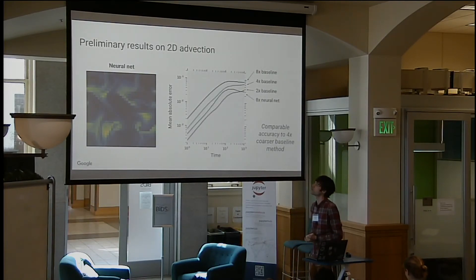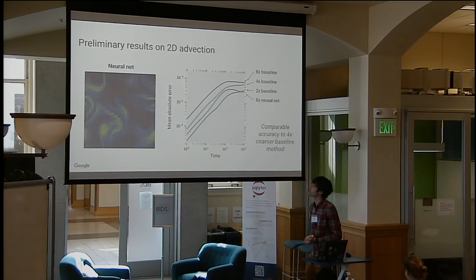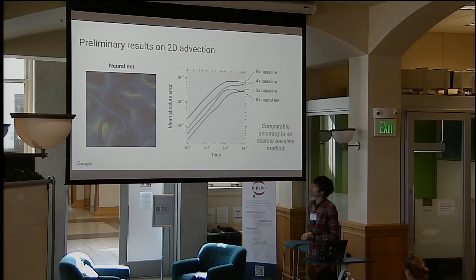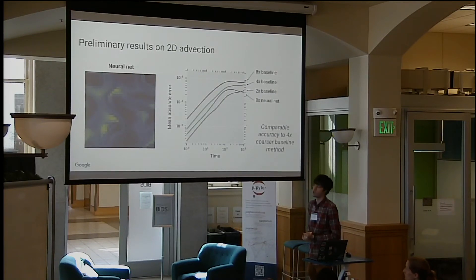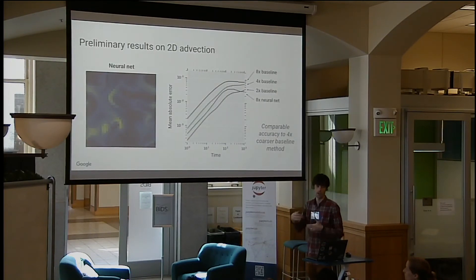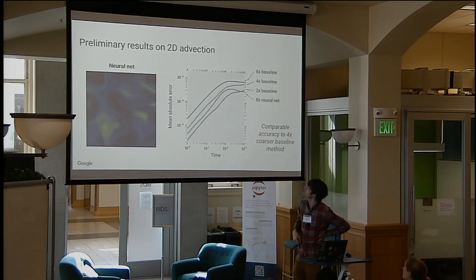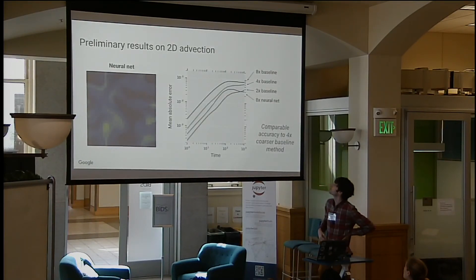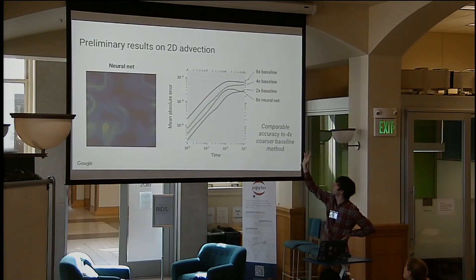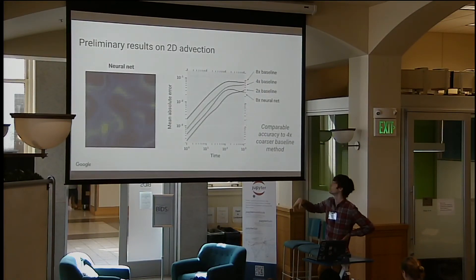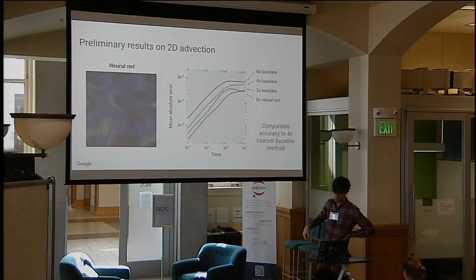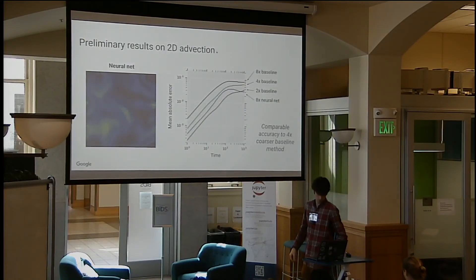We've been starting to scale this up towards more interesting problems in higher dimensions. We have some early results with advection equations, and here we're doing significantly better — roughly comparable accuracy on about four times coarser grids compared to our baseline method.